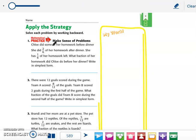Okay, so one piece of information I need is she did 2/6 of her homework after dinner. She has 1/6 of her homework left, and we need to find out what she did before her dinner. So that's going to be a key to help me figure out my problem.